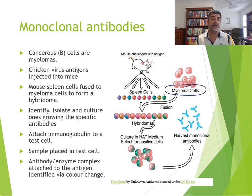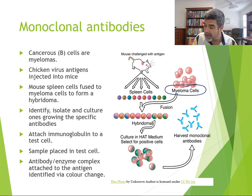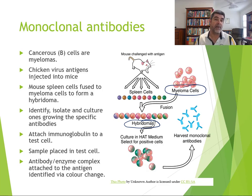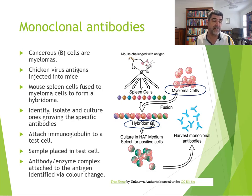We fuse the myeloma cells and the spleen cells to form hybrid cells called hybridomas. Once we've done that, we need to identify, isolate, and culture the specific cells that are growing the specific antibodies. Monoclonal — 'mono' means one, and clones are identical copies of a cell. We want lots and lots of copies of just one particular cell producing these specific antibodies.